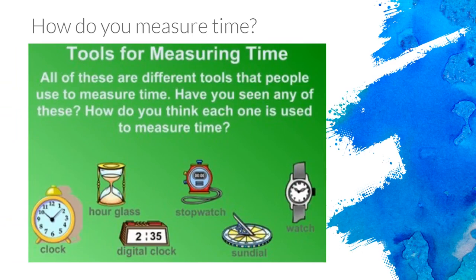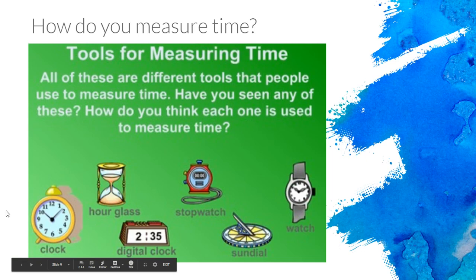So how do you measure time? Think about the word time. All of these tools that you see here are used to measure time. Have you ever seen any of these? How do you think each one is used to measure time? So a clock. I bet you've seen a clock. And there's different kinds of clocks. There's an hourglass. And that uses sand to measure time.